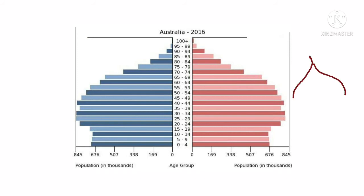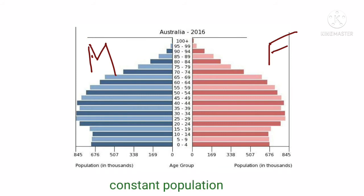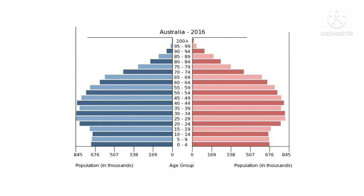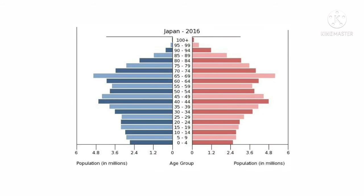Next, we talk about a constant population pyramid, using the example of Australia 2016. The shape is almost bell-shaped. The lower age group is relatively low and the 60-plus age group is higher compared to an expanding population pyramid.